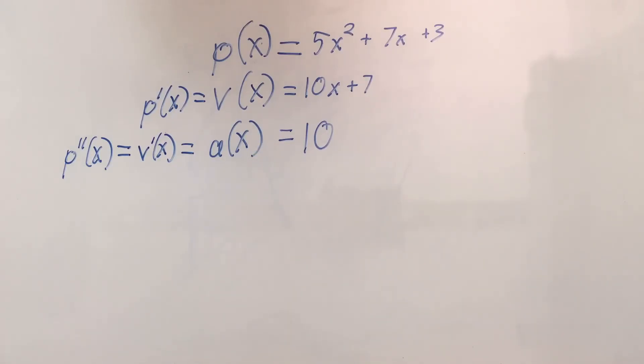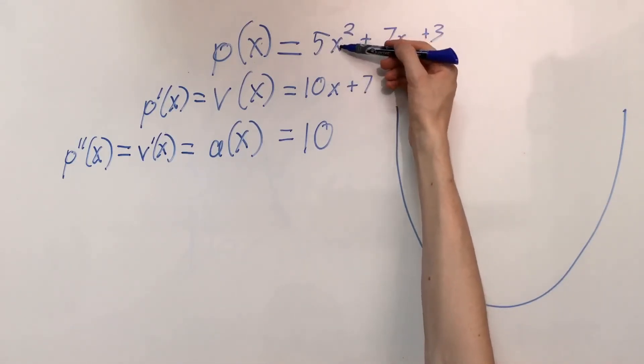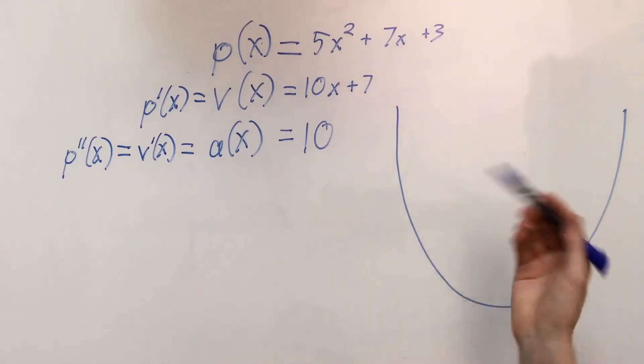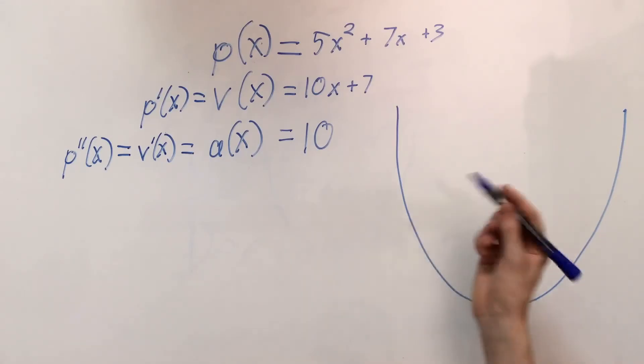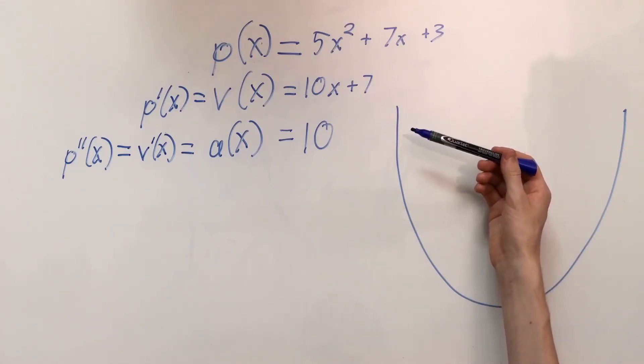And so now we know that our acceleration is just 10, just plain and simple 10. And you can kind of see that because remember from our function it is a parabola like that. So while our position function, because we know that x squared and since that's positive, it is forced to go up like that, we've got that.